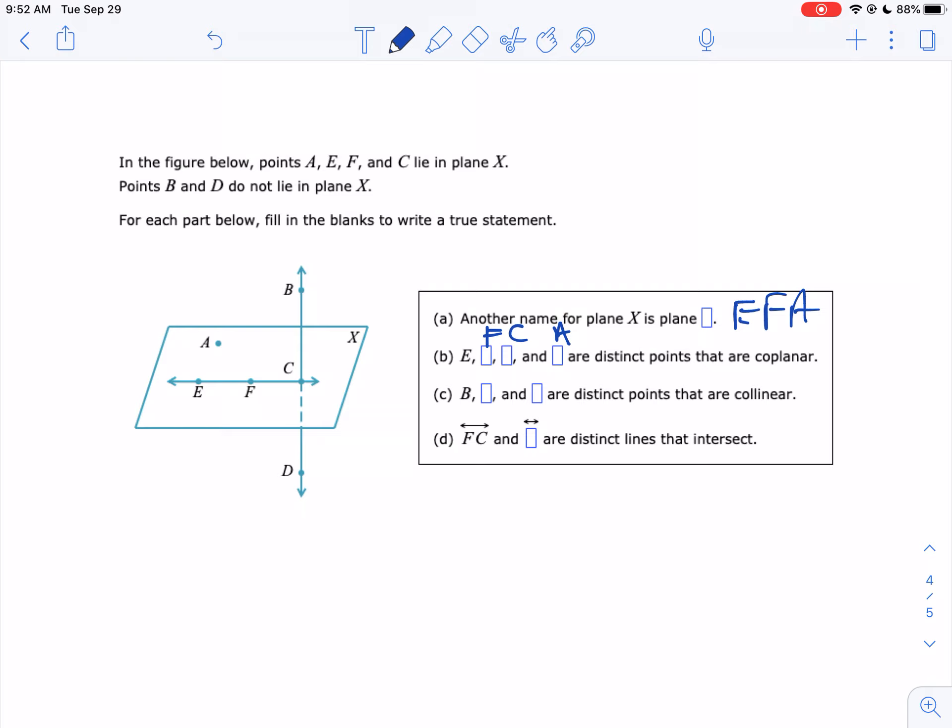B, blank and blank, are distinct points that are collinear. So I need three points that are all in the same line. Well, three points on the same line would be EF and C. But they want B. So I guess we're going to use this line here. So B, C, and D are all on the same line. And then finally, line FC. Where's FC? Here's FC. That intersects with line, now you can name a line with two points. So there's more than one correct answer here. I like line BD. That would work. You could say line BC. You could say line CD. They're all correct. That's all you had to do for that one.